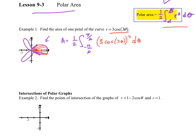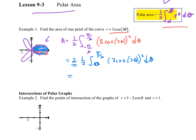If you wish, you can also use symmetry, because this portion of the petal is the same as this portion. So you can write 2 times one-half, starting at 0 and going to pi over 6 — picking up just one piece and doubling it. If you punch this into your calculator, you get 2.356 to three decimal places. That's what we're doing with this polar area.